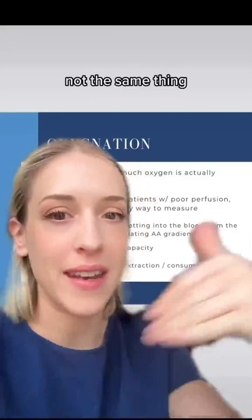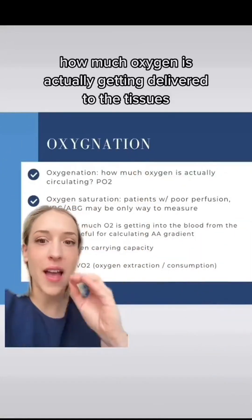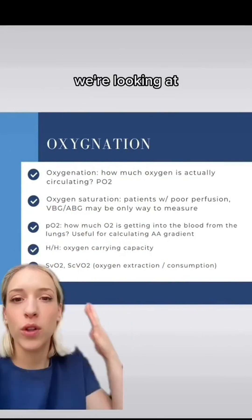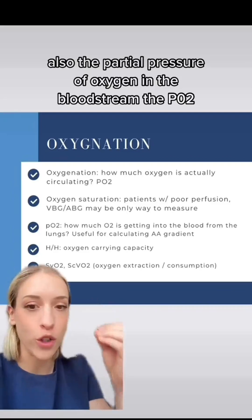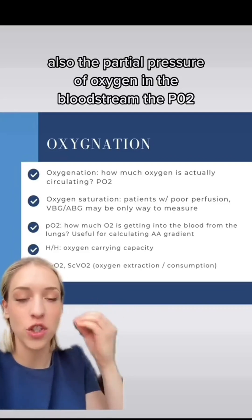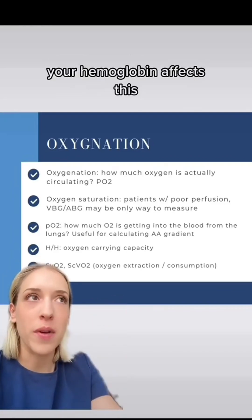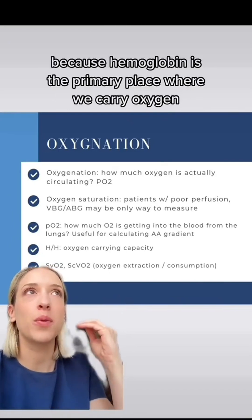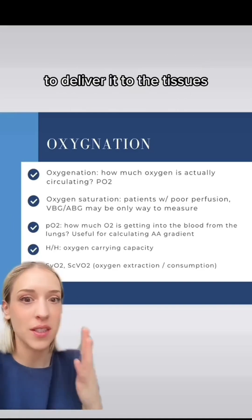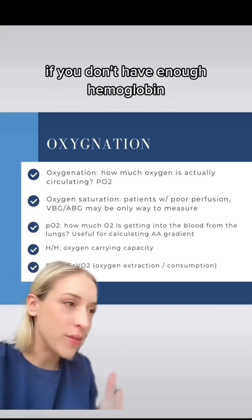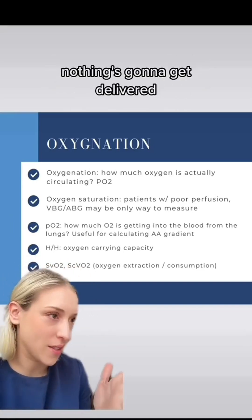Oxygenation and ventilation — not the same thing. How much oxygen is actually getting delivered to the tissues? We're looking at the O2 sat, and also the partial pressure of oxygen in the bloodstream, the PO2. Your hemoglobin affects this because hemoglobin is the primary place where we carry oxygen to deliver it to the tissues. If you don't have enough hemoglobin, you're not going to bind enough oxygen — nothing's going to get delivered.